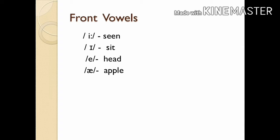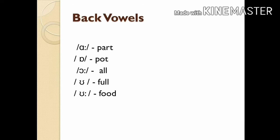Front vowels are vowels during the production of which the front of the tongue is raised towards the hard palate, and there will be sufficient space between them for the air to escape freely without any friction. These are the front vowels in English: /iː/ as in 'seen,' /ɪ/ as in 'sit,' /e/ as in 'head,' and /æ/ as in 'apple.'